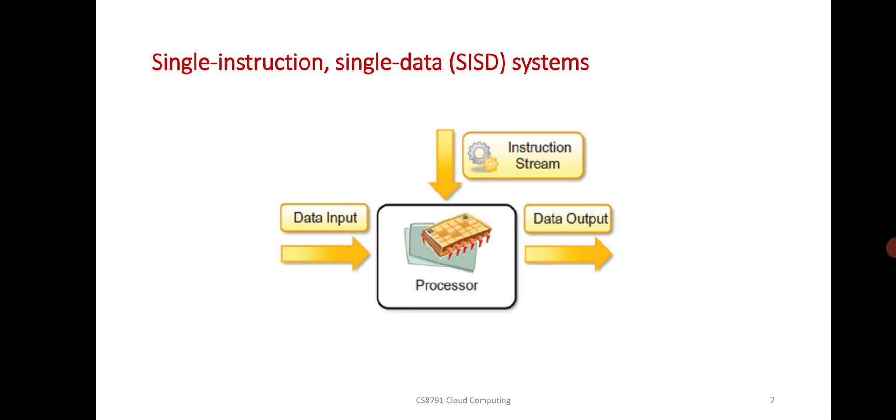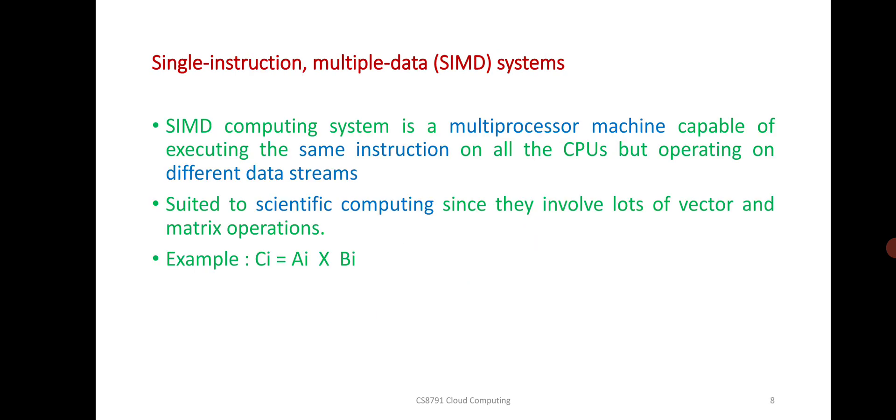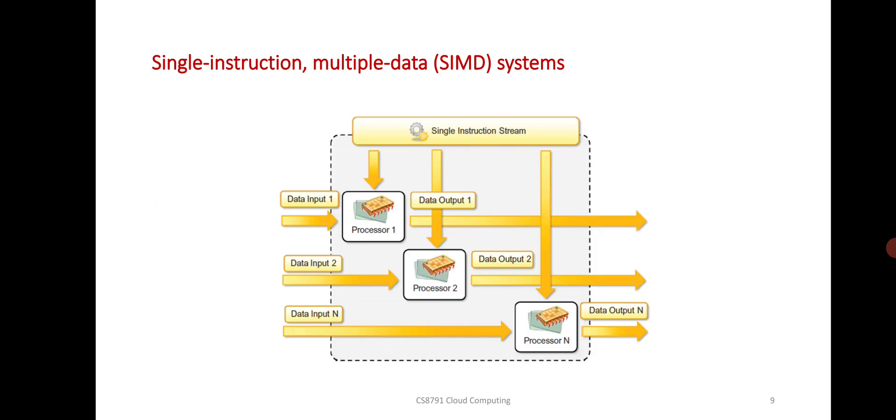Single instruction multiple data system (SIMD) computing system is a multiprocessor machine capable of executing the same instruction on all the CPUs but operating on different data streams. The same instruction is executed on different data. You can see the diagram of single instruction multiple data system.